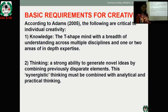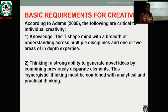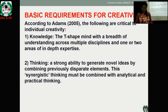Having looked at the stages of the creative process, we now look at the basic requirements for creativity. According to Adams in 2005, the following are critical to individual creativity. The first is knowledge — a mind with a breadth of understanding across multiple disciplines and one or two areas of in-depth expertise. Whatever you want to do, it is good to have full knowledge of it, and when you do, it will help you know how to go about actualizing that knowledge.